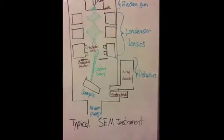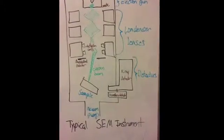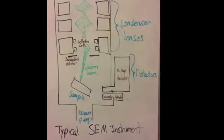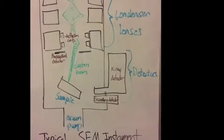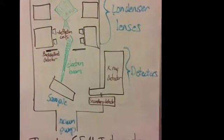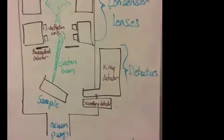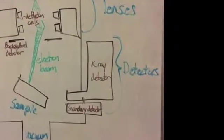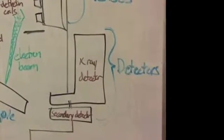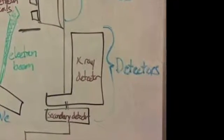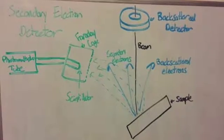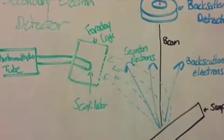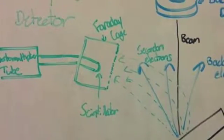To be able to form images with the electrons, the SEM needs detectors. The detector for secondary electron imaging is placed off to the side in the sample chamber and consists of several parts. The Faraday cage is a charged wire mesh that attracts the secondary electrons to it.